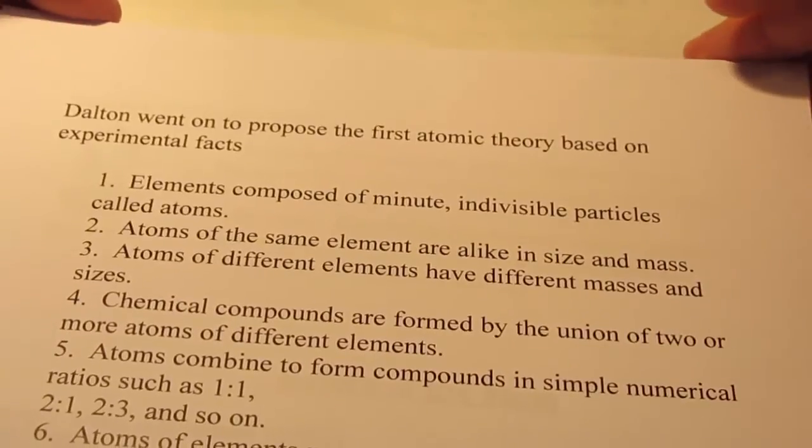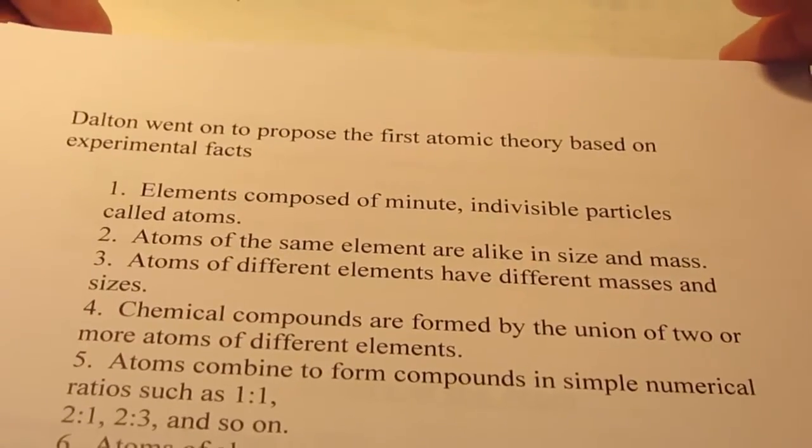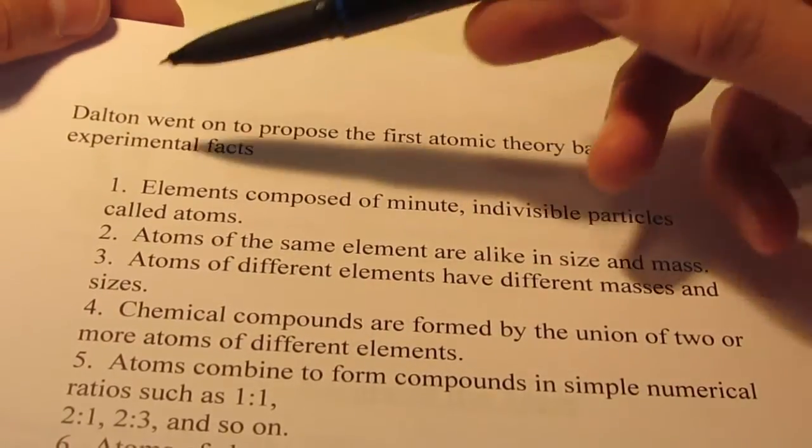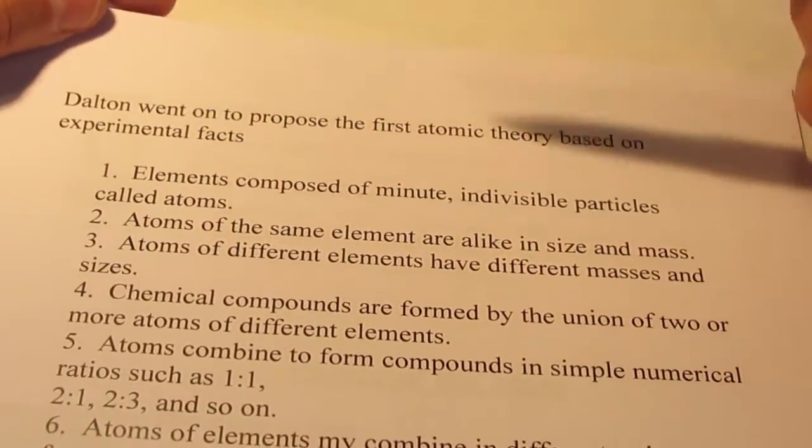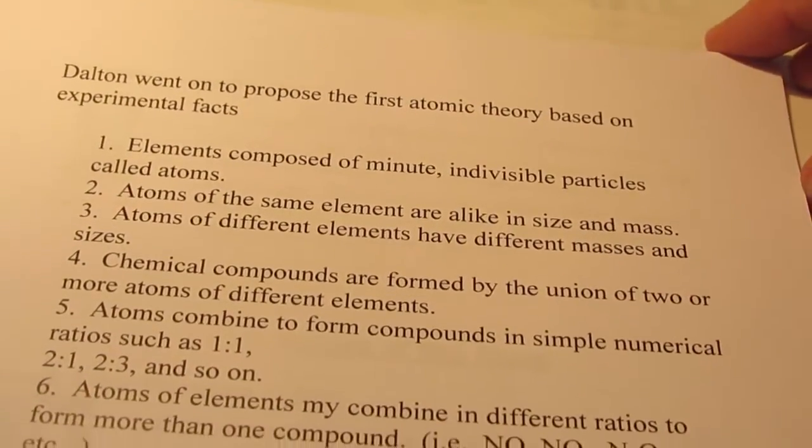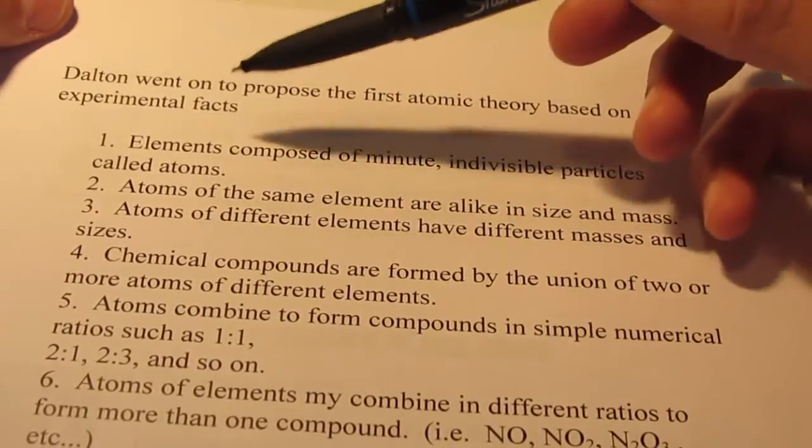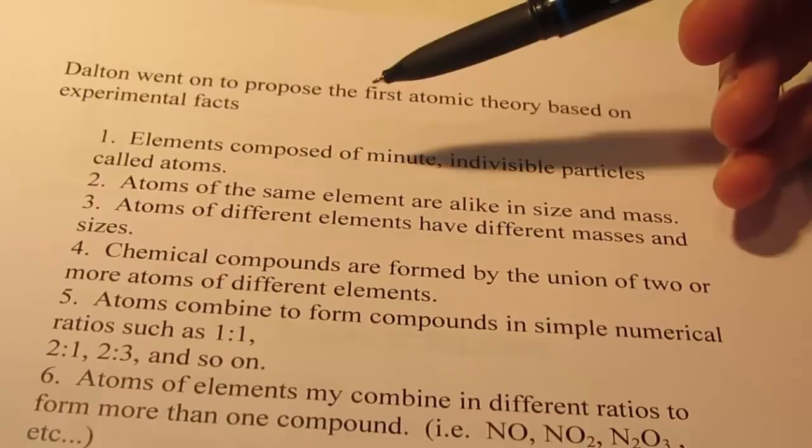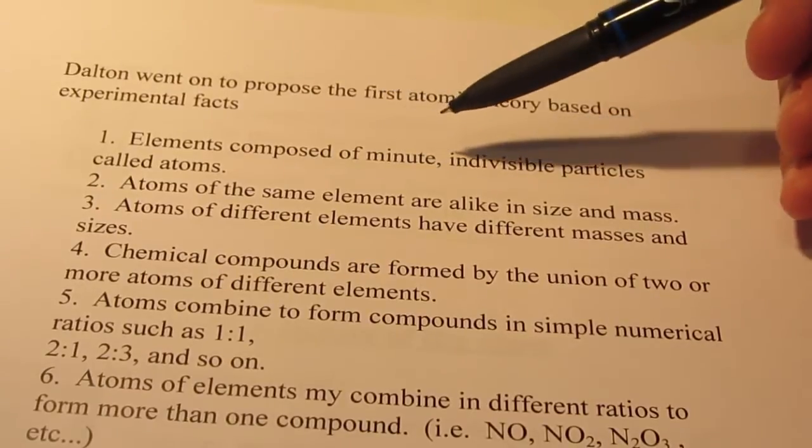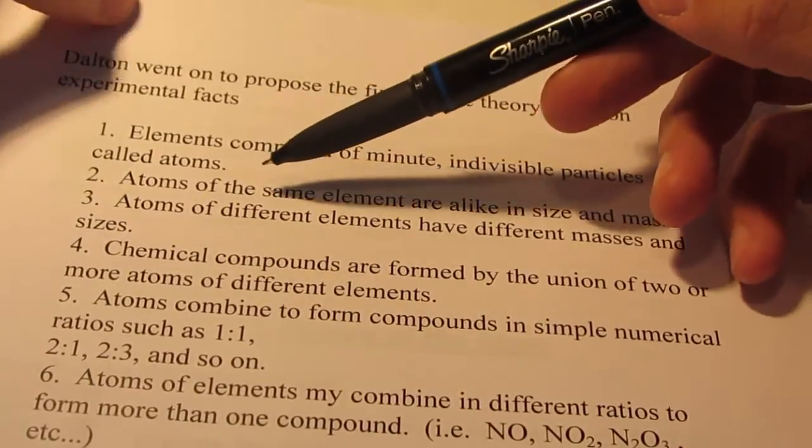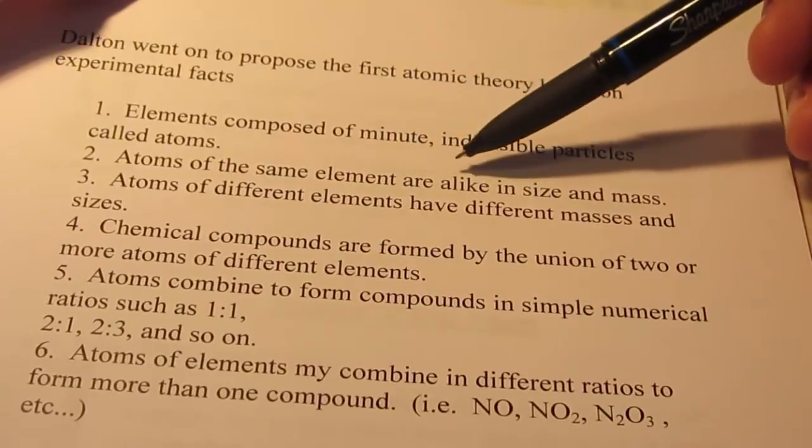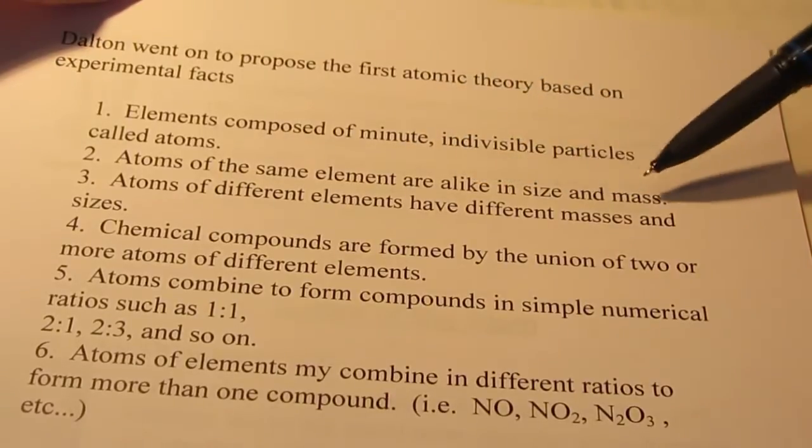So Dalton went on to propose the first atomic theory based upon experimental facts. Once again, not necessarily experiments that he did, but experiments and knowledge that he gained from others like Lavoisier and Proust. So number one, elements are composed of minute, indivisible particles called atoms. Atoms of the same element are alike in size and in mass.